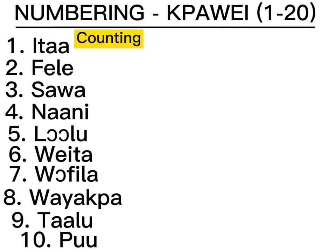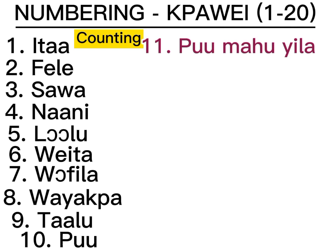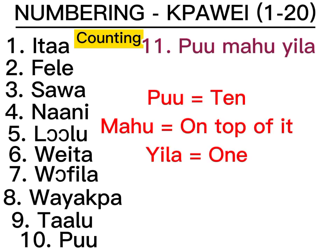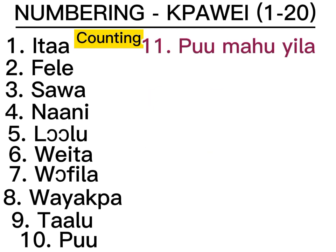To go from 10 to 20, we have to use the word Mahon. When we say Mahon in Mende language, we mean 'on top of it.' So when we want to say 11, we say Puu Mahon Yila — 10 on top of it, 1. Remember Yila? We don't say Puu Mahon Ita; we say Puu Mahon Yila. It is the same pattern you are going to use with all the other numbers up to 19.